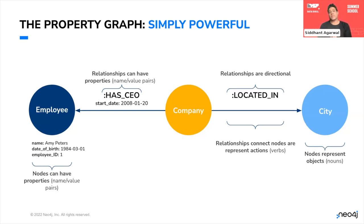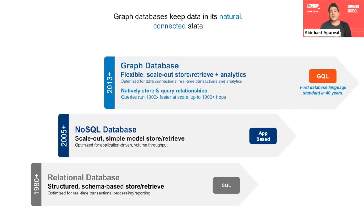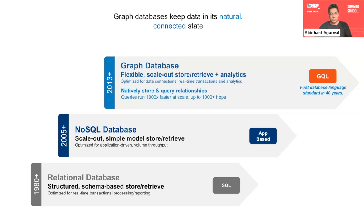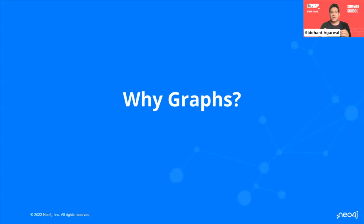Overall, the graph model makes it easier to understand and use data, leading to more insights and better decision making. That's how graph databases came into the picture — where earlier we solely worked on relational databases, then came NoSQL databases, and then came graph databases.